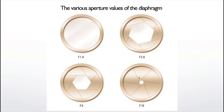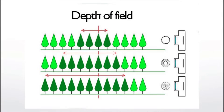What does a big or small aperture do? It controls what we call the depth of field. In this diagram viewed from the side, you have the camera, the aperture, and trees. The light green trees are blurry — not sharp. The dark green trees are very sharp, and the trees beyond are not sharp again. When the aperture is big — a small number like F1.4 or F2 — you have a narrow depth of field. If you close the diaphragm to a smaller aperture, your depth of field gets bigger.